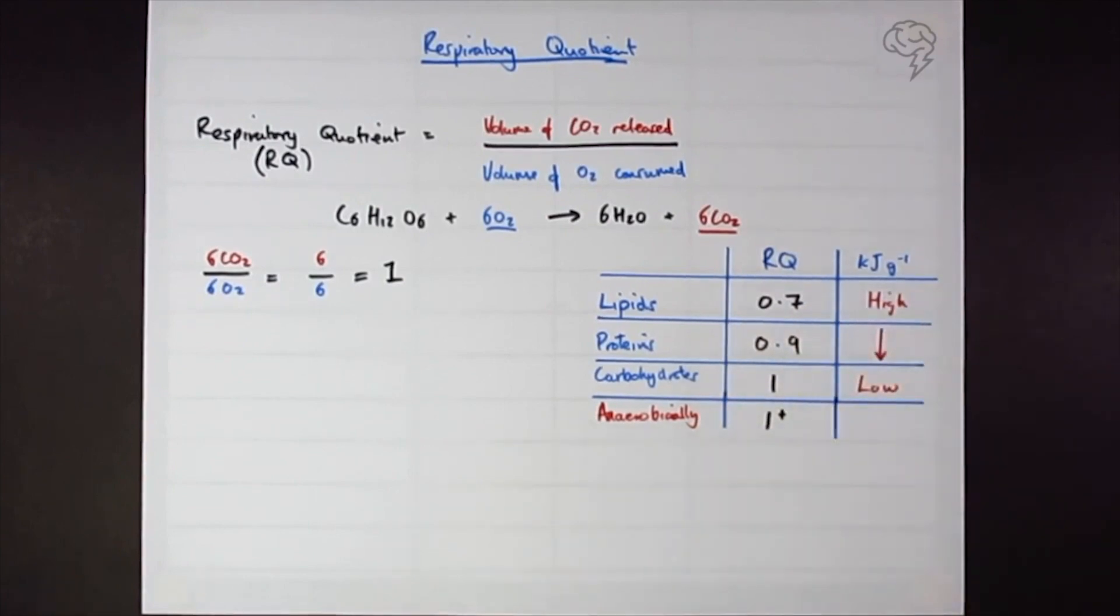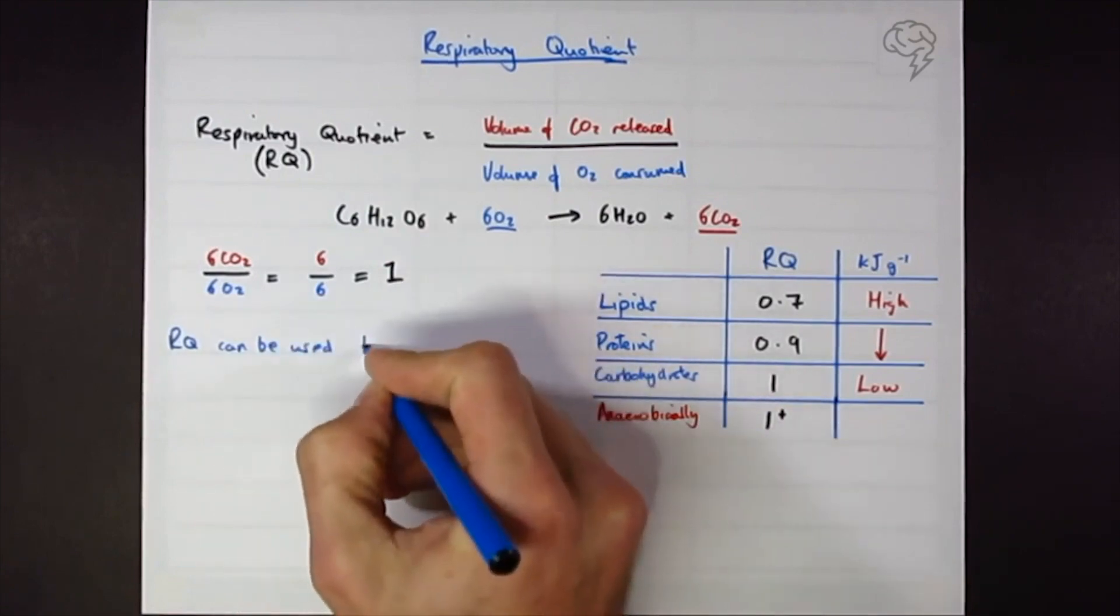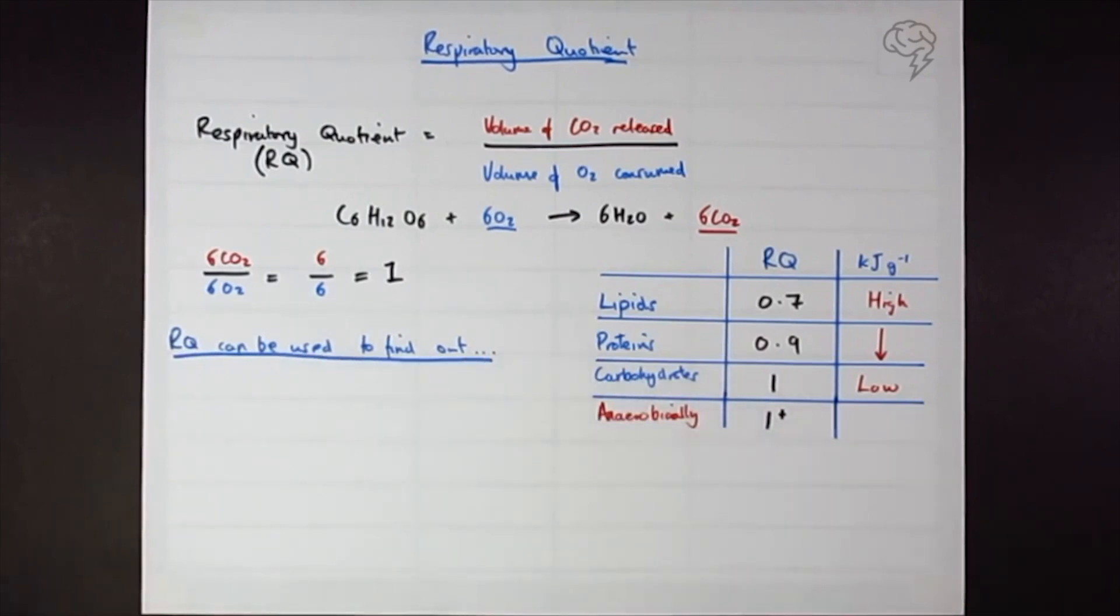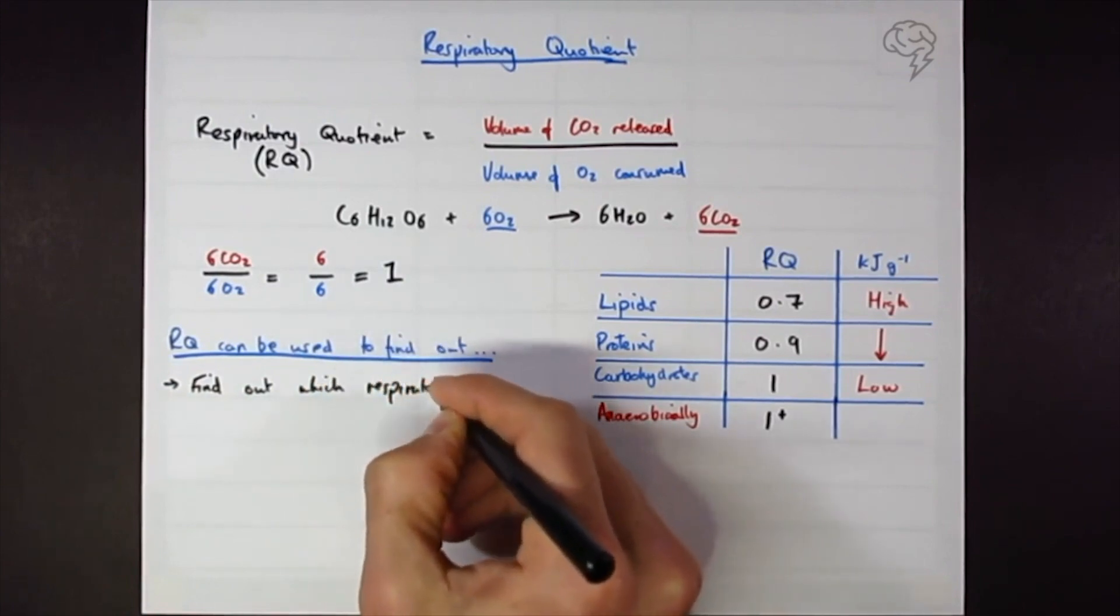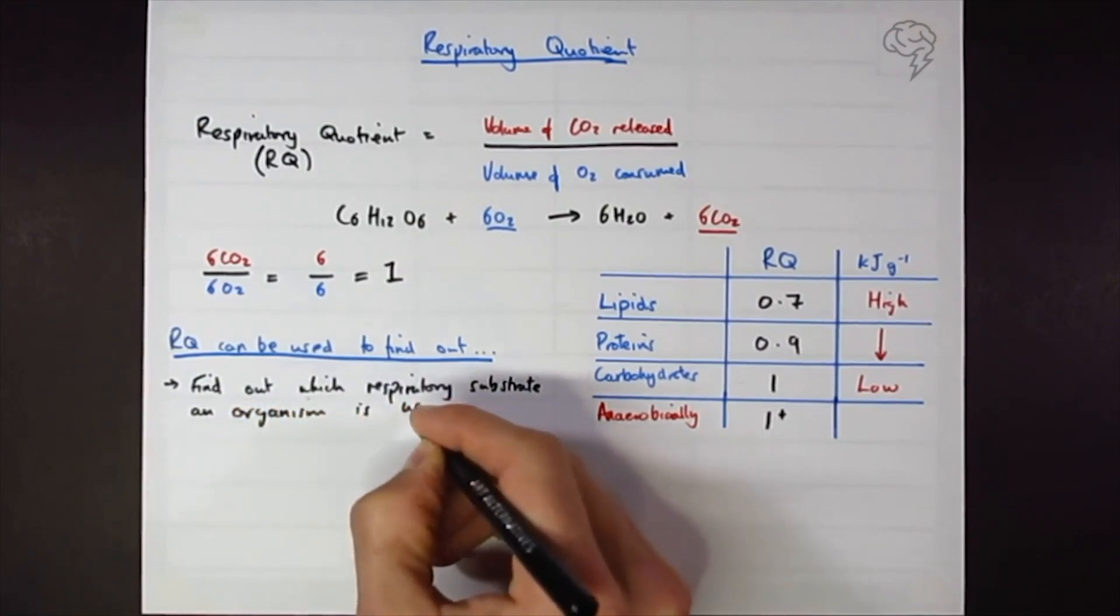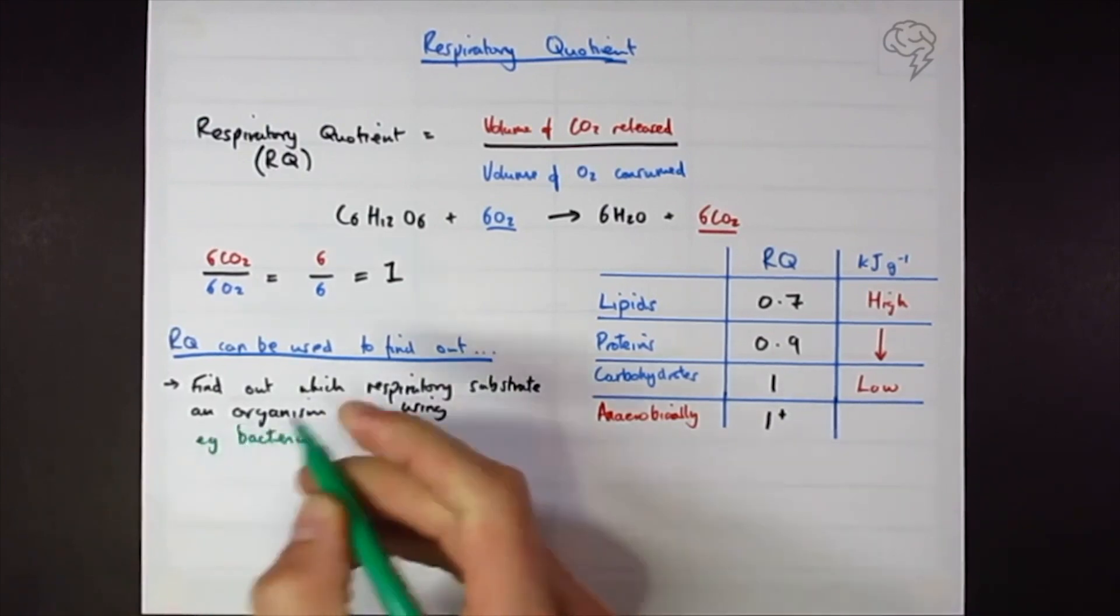How do we use this and what are the practical applications? We can find out what type of respiratory substrate an organism is using. This could be a bacteria in a culture medium which has different respiratory substrates, or you could be looking at a human on a mixed diet of fat and carbohydrates to see which ones they're actually metabolizing.